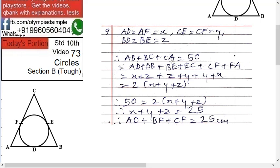But AD is X, DB is Z, BE is Z, EC is Y, CF is Y, and FA is X. Therefore, if you add them, you get 2 times X plus Y plus Z, and that equals 50. So X plus Y plus Z equals 25.